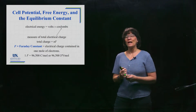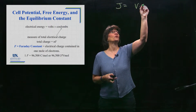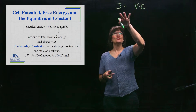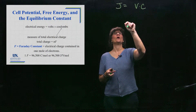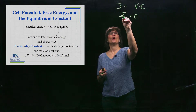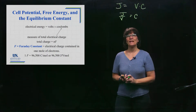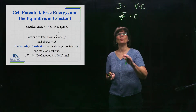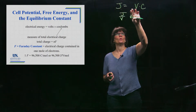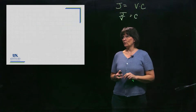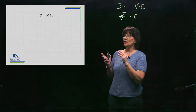Faraday's constant can also be expressed as joules per volt·mole, because the relationship between joules and electrical units is: joules equals volts times coulombs. So a coulomb can be replaced by joules per volt. This is sometimes convenient when you want certain units to cancel. This is the relationship between the SI unit for energy (joule) and volts and coulombs for electrical energy.